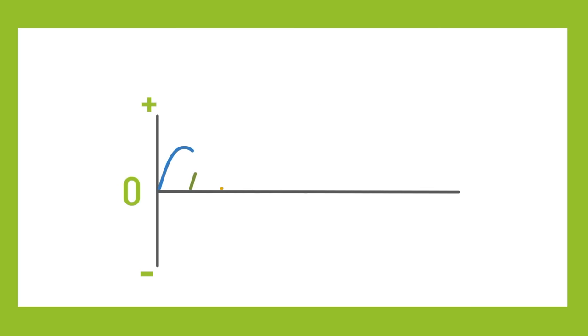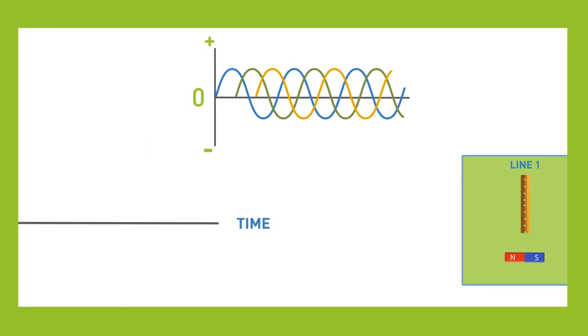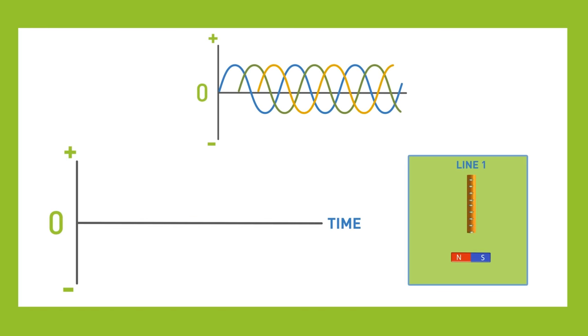Now let's explain those confusing waveforms that are frequently used to depict three phase. If you look at the waveform example, you can see the first line in blue and it starts at zero, which means the magnet is perpendicular to that line.